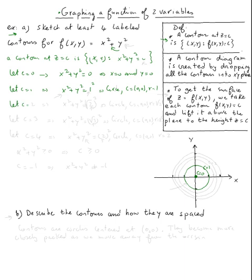At c = 2, we get x² + y² = 2. Two is the same as (√2)², so again we get a circle with center (0, 0) but radius √2, which is approximately 1.41.